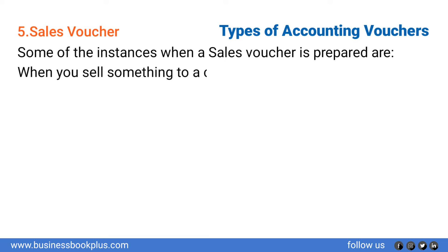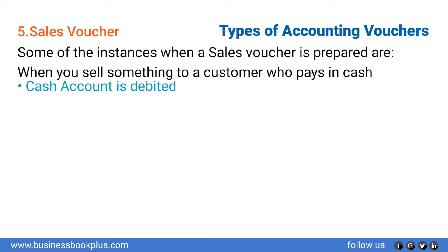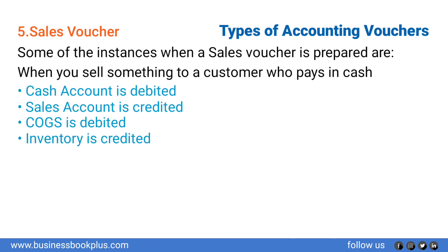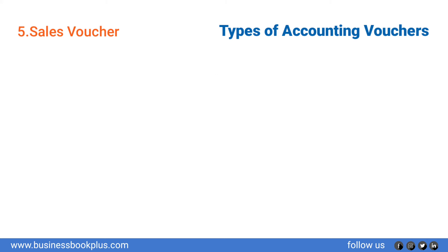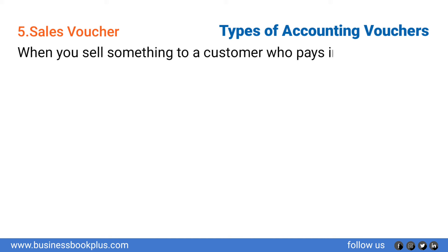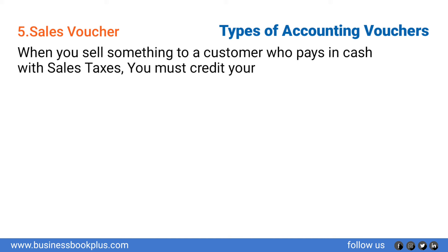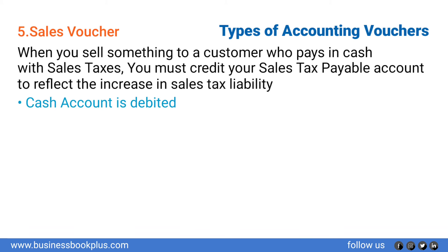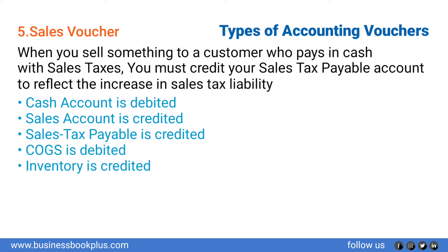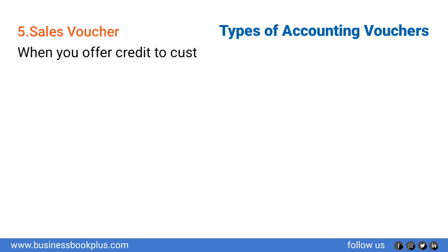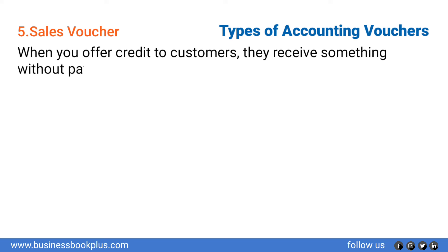Some instances when a sales voucher is prepared: when you sell something to a customer who pays in cash, four accounts are affected — cash account and cost of goods sold account are debited, and sales account and inventory account are credited. When a customer pays in cash with sales tax, you must credit the sales tax payable account to reflect the increase in sales tax liability — five accounts are affected: cash account and cost of goods sold are debited, while sales, sales tax, and inventory accounts are credited.